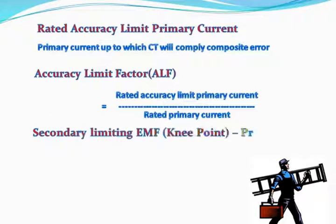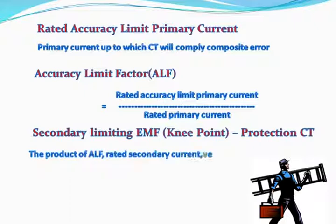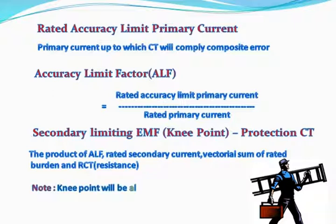The secondary limiting EMF, or knee point, for protection CT is the product of ALF, rated secondary current, and the vectorial sum of rated burden and RCT. Please note that the knee point will always be higher than this calculated value for protection CT.